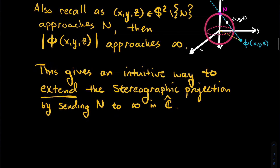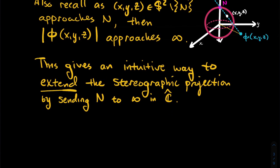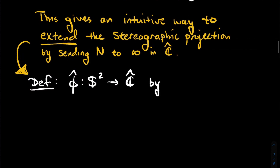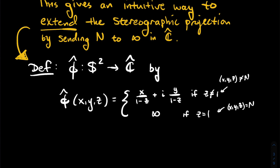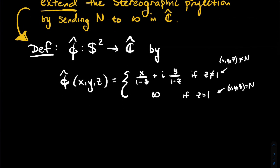We're going to send N — the north pole, which was a problematic point for stereographic projection — to infinity. We define a new function φ̂, going from the whole sphere S² (N included) to the extended complex plane. The formula is piecewise: if you're not the north pole, the output is x/(1−z) + i·y/(1−z), and if you are N, then N maps to infinity.